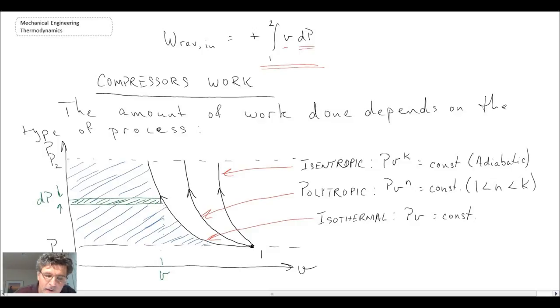So our reversible work-in equation is evaluating the area to the left of our compression curve. Now what we can do, we can take the different pressure relationships and specific volume relationships and integrate them, and come up with expressions for the work, for either an isentropic, a polytropic, or an isothermal compression process. I'm not going to do that, however that is in your textbook.